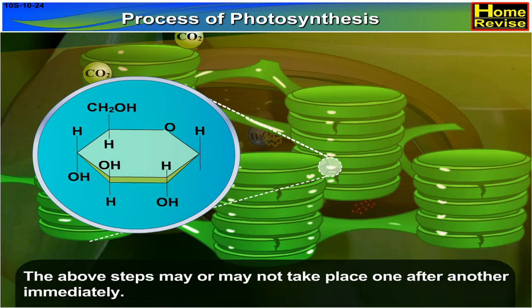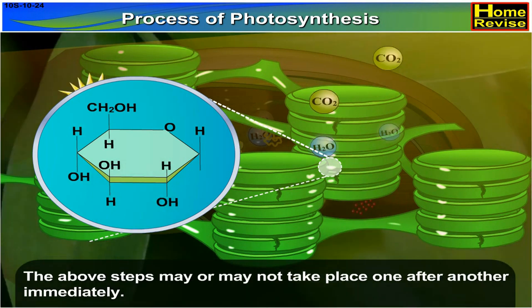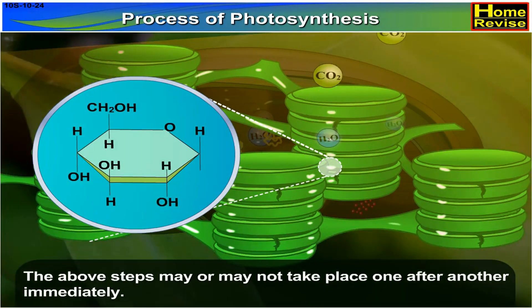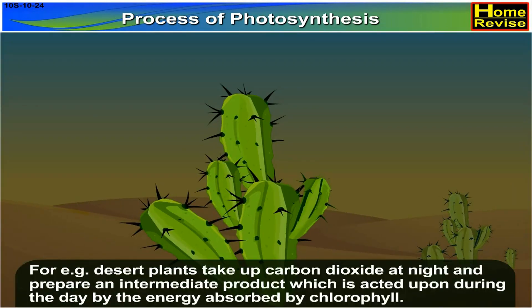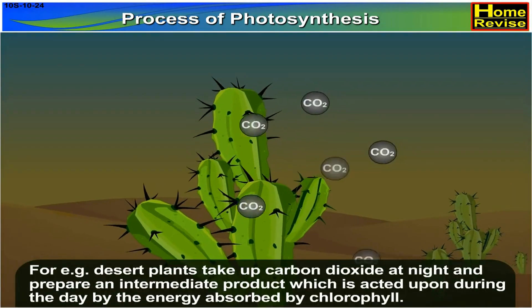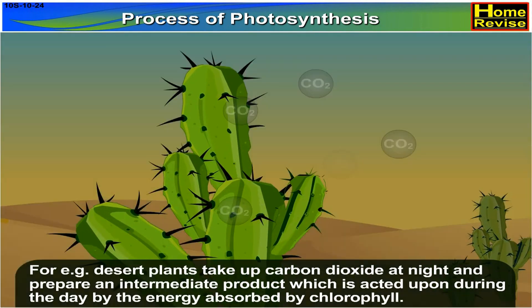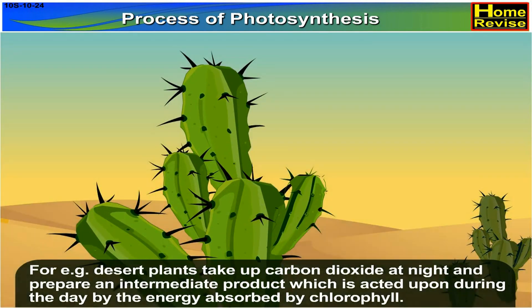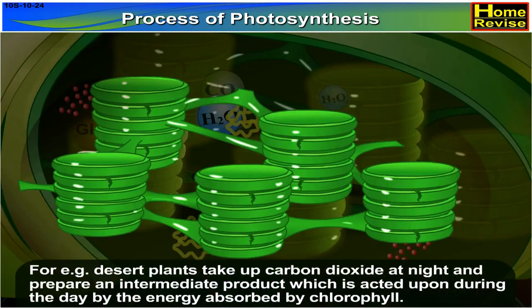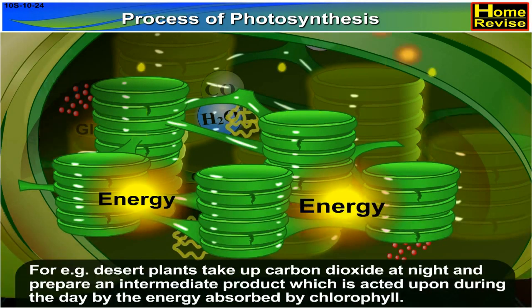The above steps may or may not take place one after another immediately. For example, desert plants take up carbon dioxide at night and prepare an intermediate product, which is acted upon during the day by the energy absorbed by chlorophyll.